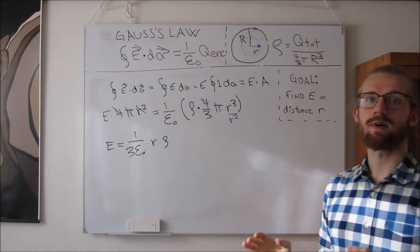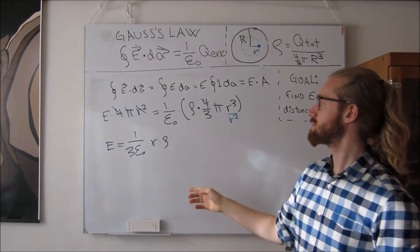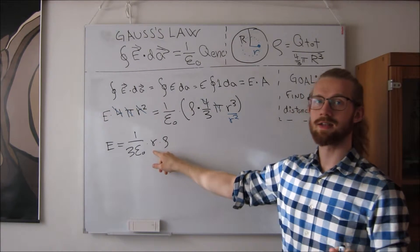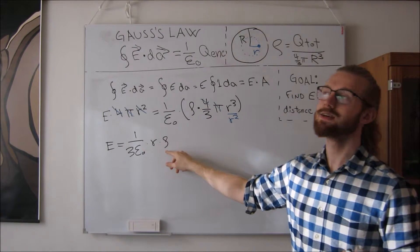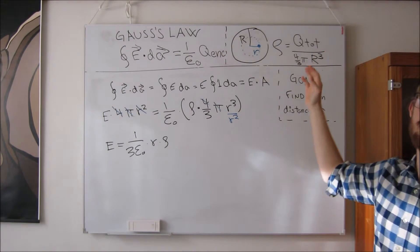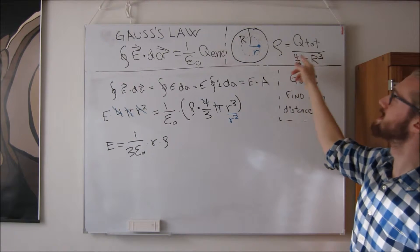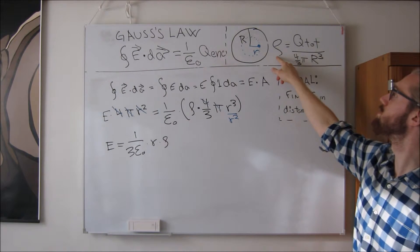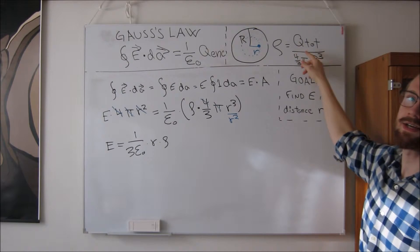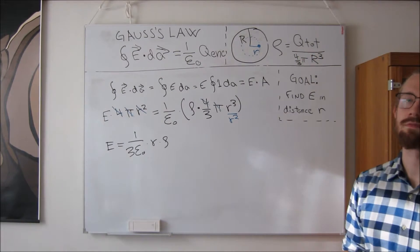If we want to rewrite this in terms of the distance, and then not the charge density, but rather the total charge of the sphere, we just use this information and substitute that rho is equal to the total charge divided by the total volume of the sphere.